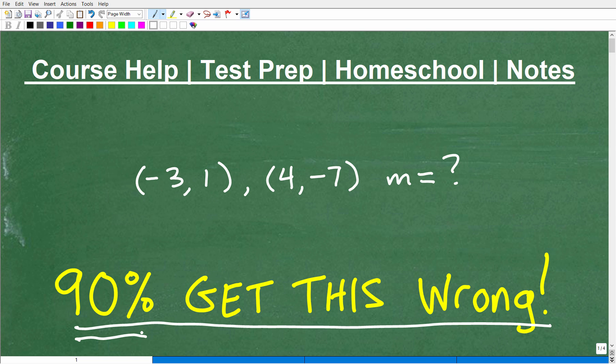So we're going to talk about this specific mistake, and it relates to this type of problem. Here I have a point on the XY plane, and I have another point. So I have two points, and I want to find this. So what is this right here, this little M? Well, that is the slope. This is absolutely a critical skill that you need to know in algebra.